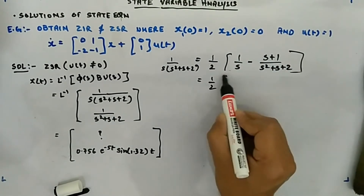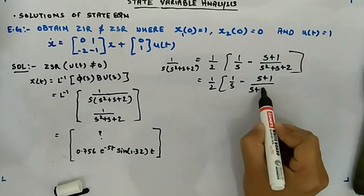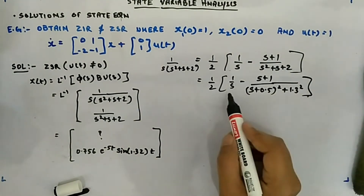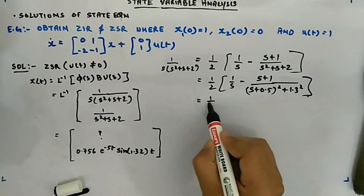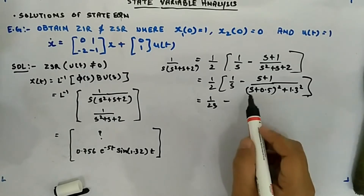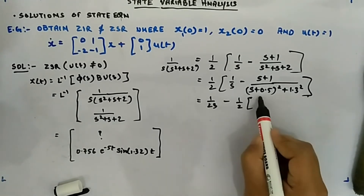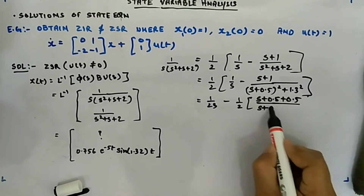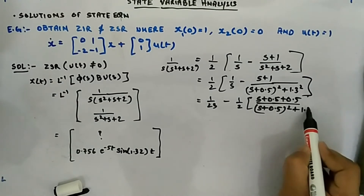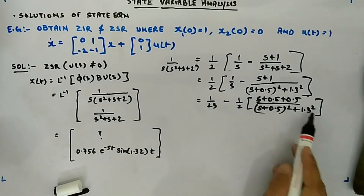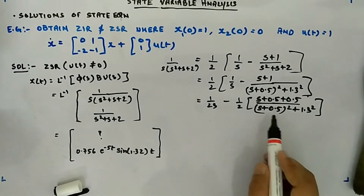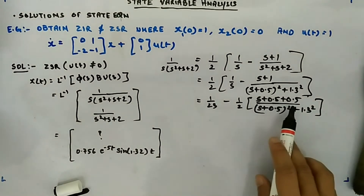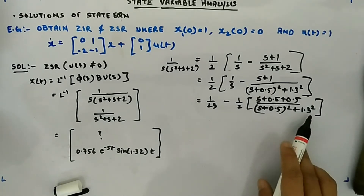Now I can write 1/s minus (s+1) divided by (s+0.5)²+(1.3)². I can write this separately as (1/2)·1/s minus (1/2)·(s+0.5+0.5) over (s+0.5)²+(1.3)², so that it becomes just like the ZIR term we already calculated. We can check: (s+0.5+0.5+0.5) / [(s+0.5)²+(1.3)²] — that is what we had.